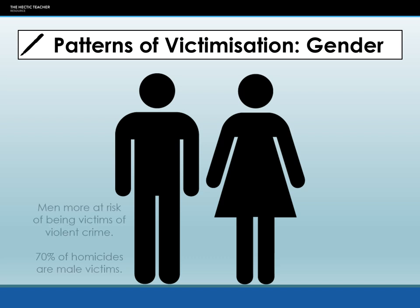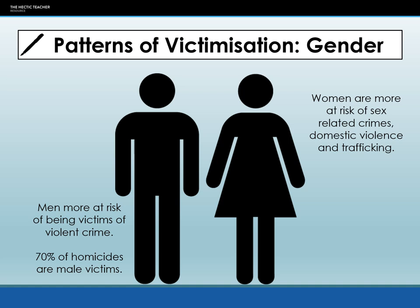In terms of gender, men are more at risk of being victims of violent crime. In the UK, around 70% of homicides have male victims. From masculinity theory, men are more likely to get into physical altercations leading to assault, GBH or murder, and are more likely to be in situations where criminal activity takes place — linking back to bedroom culture and women's control over their time and space. Men are more at risk of violent crime and personal crimes, whereas women are more likely to be at risk of sex-related crimes.